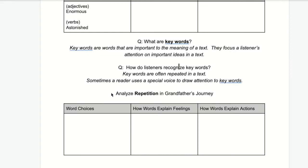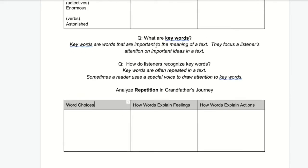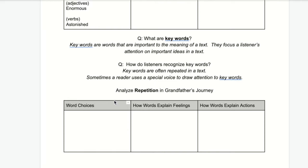Your next activity is analyzing repetition in Grandfather's Journey. It's similar to the graphic organizer you just completed, but now I want you to look at repeated words throughout the text. You have the option of going back to a previous lesson and listening to my read-aloud again, or you can go directly to the PDF of the whole book and flip through the pages to see what words Alan Say repeats over and over again, and how those words explain grandfather's feelings and actions.